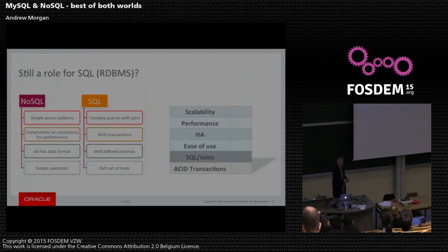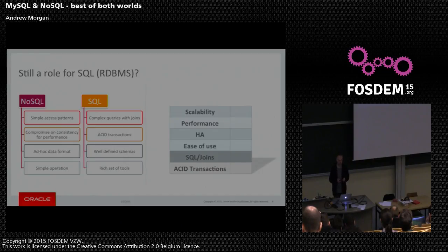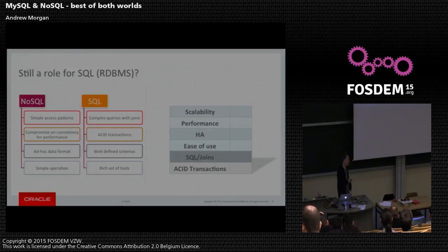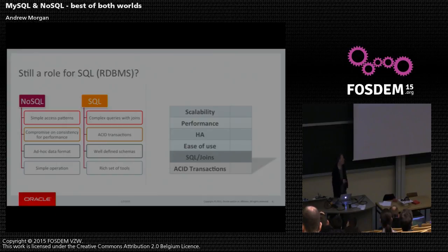Conversely, what's still good about relational databases? You can have much richer queries — joins across scores of tables, foreign keys. You've got the safety of ACID transactions, so your data is safe and you're going to read back what you've written. Well-defined schemas, so you don't have the chaos of a document store where the application could store completely random data in each row. And because they've been around a lot longer, you tend to have a much richer set of tools. I've got a scorecard, and I'm going to try and convince you that with MySQL, and in particular MySQL Cluster, you can get all of those advantages of the NoSQL store while still having the benefits of a relational SQL database.